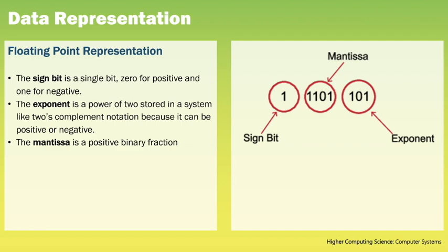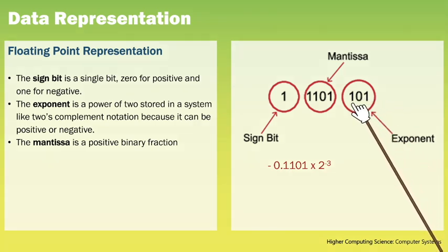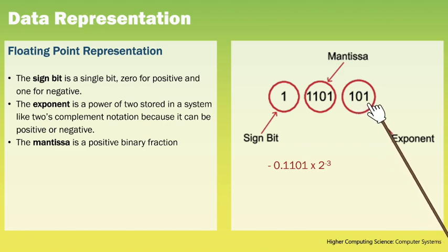From 2's complement we know that the exponent starts with 1, indicating it will be a negative number. So we can say that this number is minus 0.1101 times 2 to the minus 3. We know this is minus 3 because we take minus 4 and add 1 to it. This gives us the answer minus 0.001101 when we take it out of floating point representation.